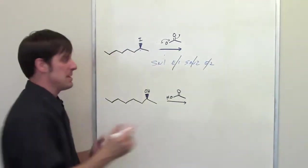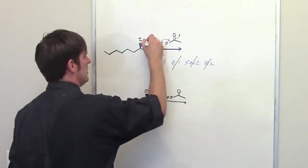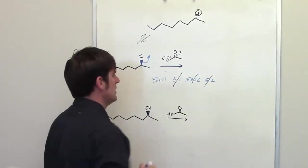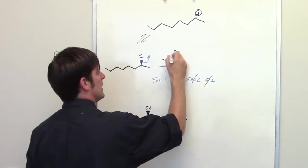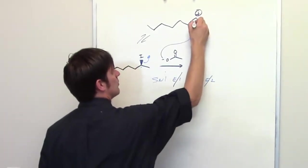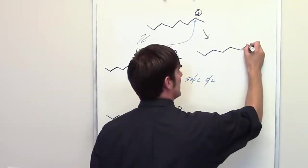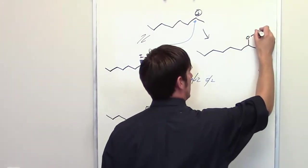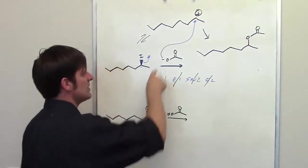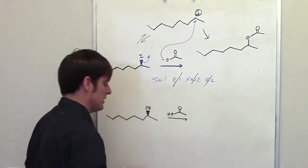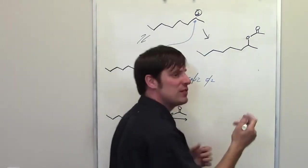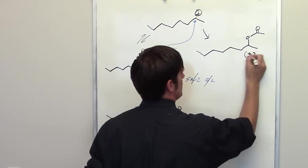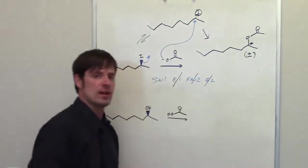Mechanistically, that means this. The iodide takes off, gives me this carbocation intermediate. The negative charge on my acetate then comes in here, forms a bond, and it gives me this molecule right here. Now note, because this came into carbocation, it can come from either side, which means I'm going to get a roughly 50-50 racemic mixture with respect to that stereocenter right there.